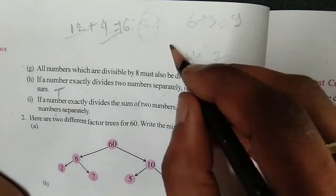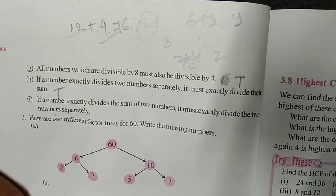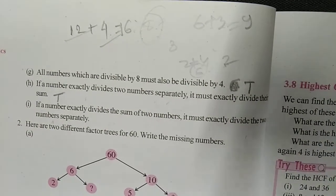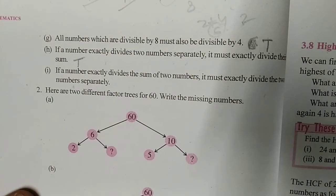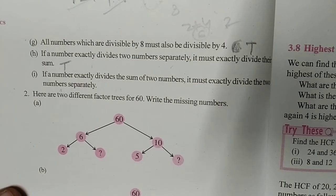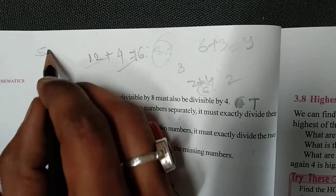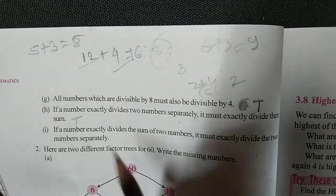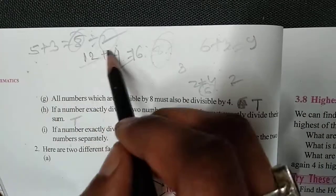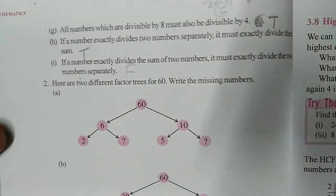Another example: 6 and 3 — their sum is 9, which is divisible by 3. Suppose 5 and 3 — their sum is 8, which is divisible by 2, but 5 is not divisible by 2 and 3 is not divisible by 2. So this cannot always be true. Students, write 'false' here — this is a false statement.